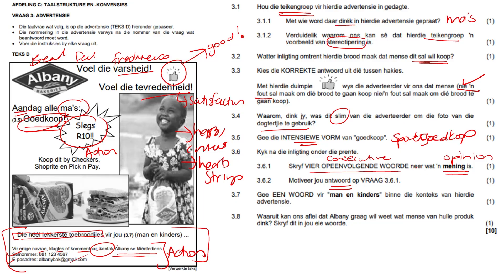They would ask you to motivate your answer. Why did you take out those four words to show us an opinion? Your answer for all opinions will be: just because you think it's delicious doesn't mean everyone is going to think it's delicious — and that is why it's an opinion. So in Afrikaans, just show that not everyone likes the bread, or not everyone thinks it makes the best sandwiches.